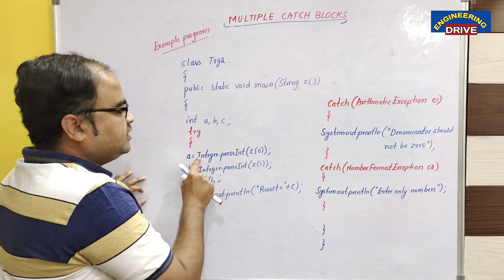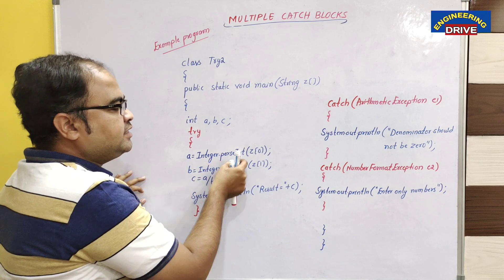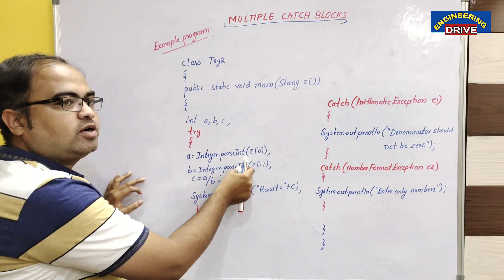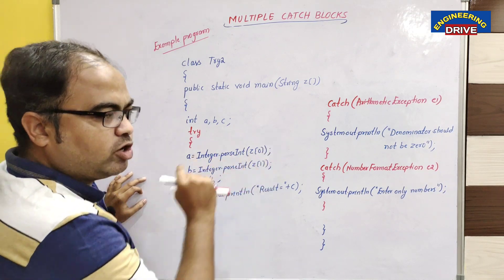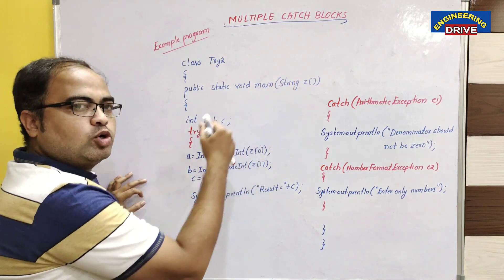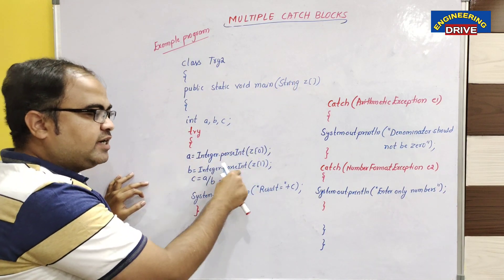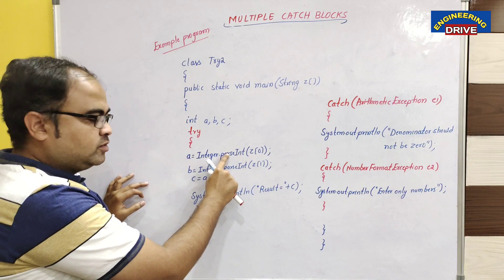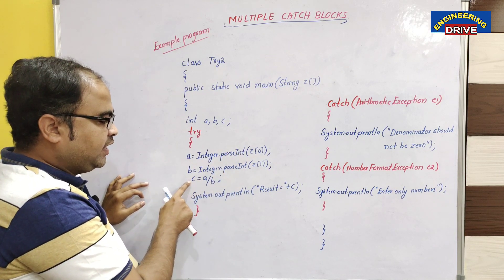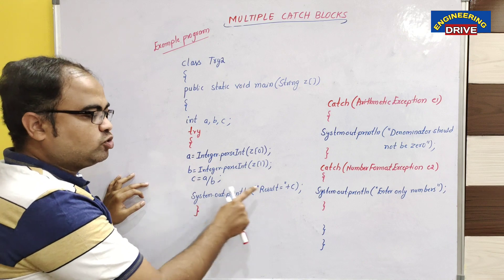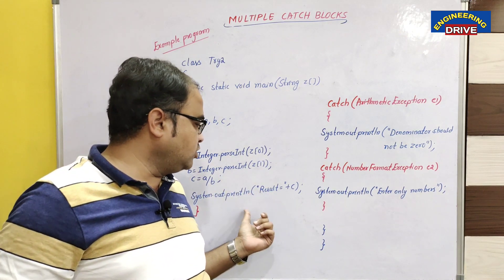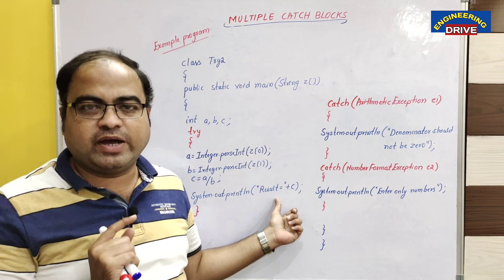Here, a is equal to Integer.parseInt of the first argument, and b is equal to Integer.parseInt of the second argument. I want to accept these two values from the keyboard through command-line arguments. Finally, I am performing division of those two values and storing the result in variable c, then displaying it using System.out.println.